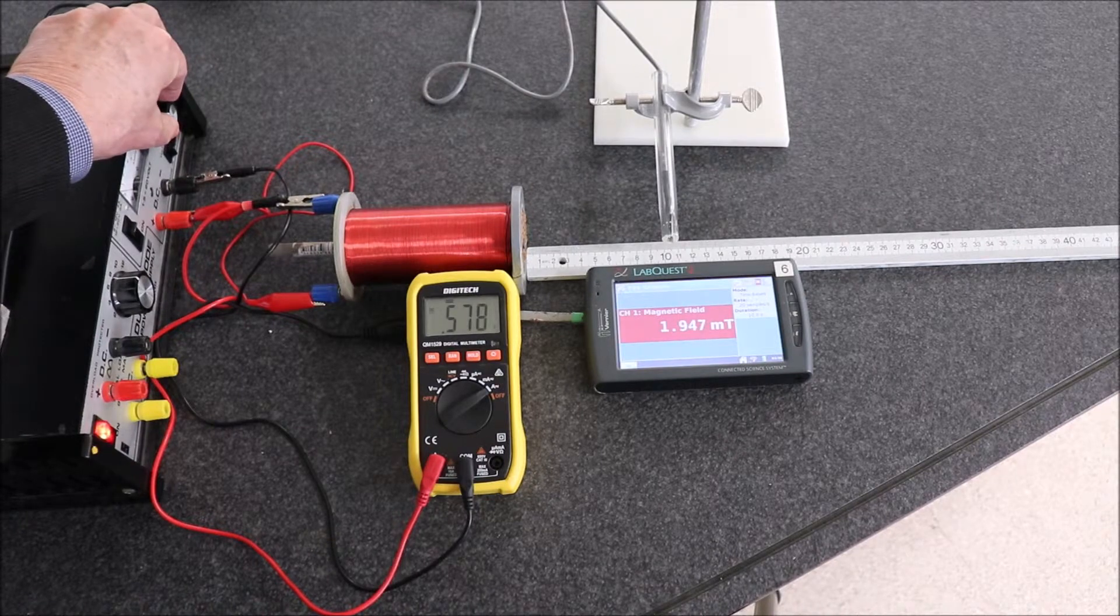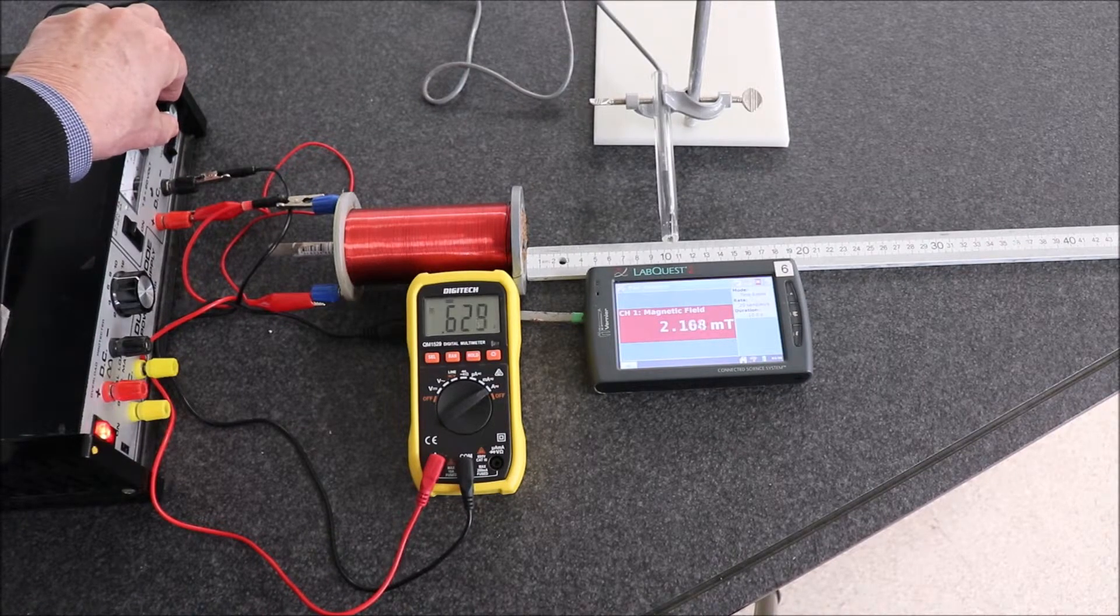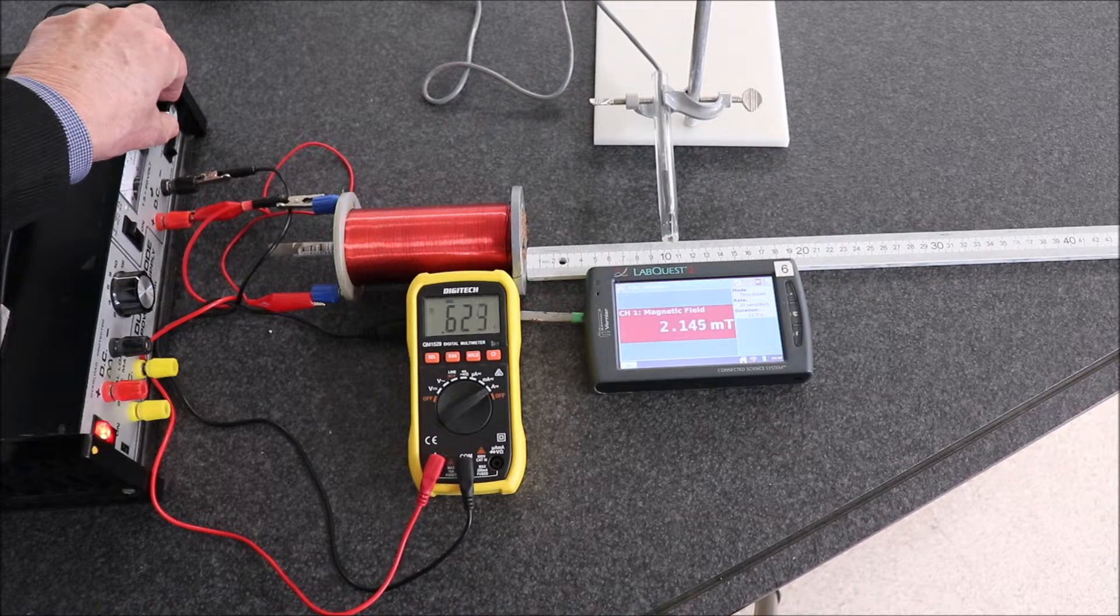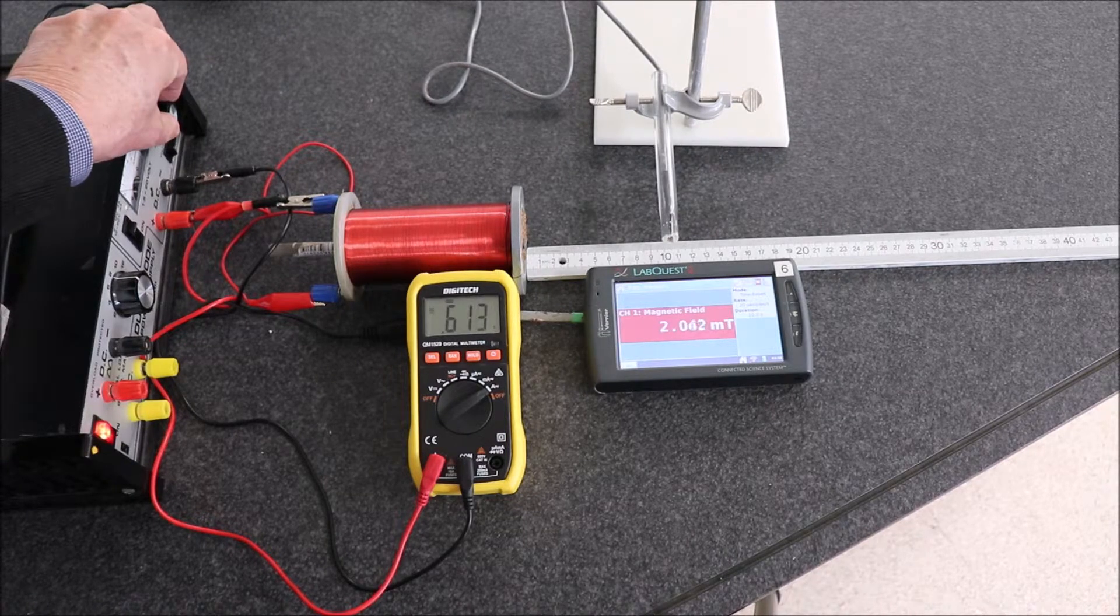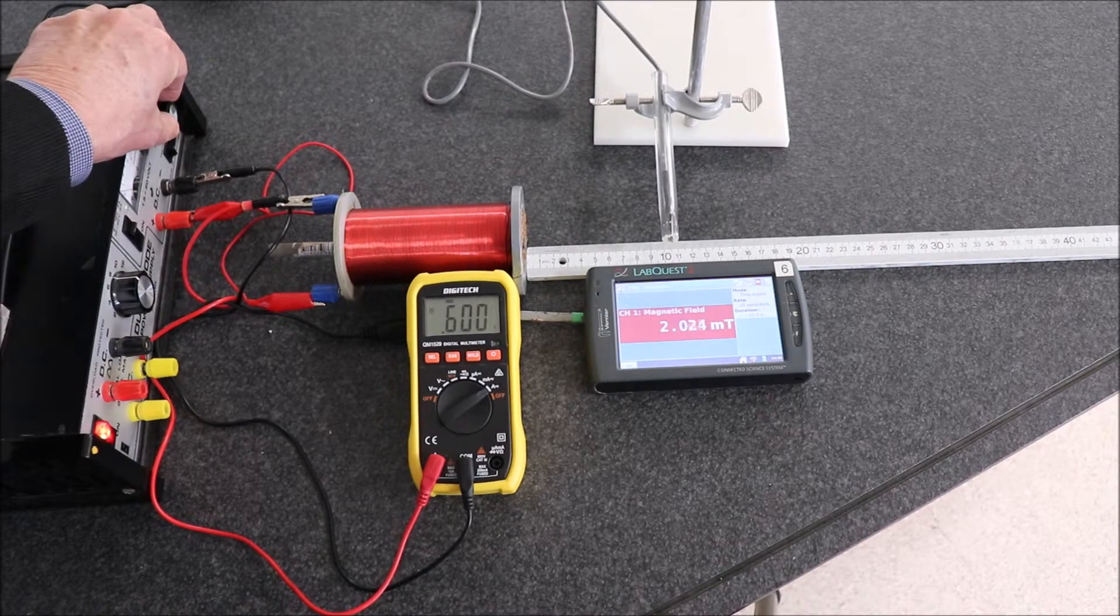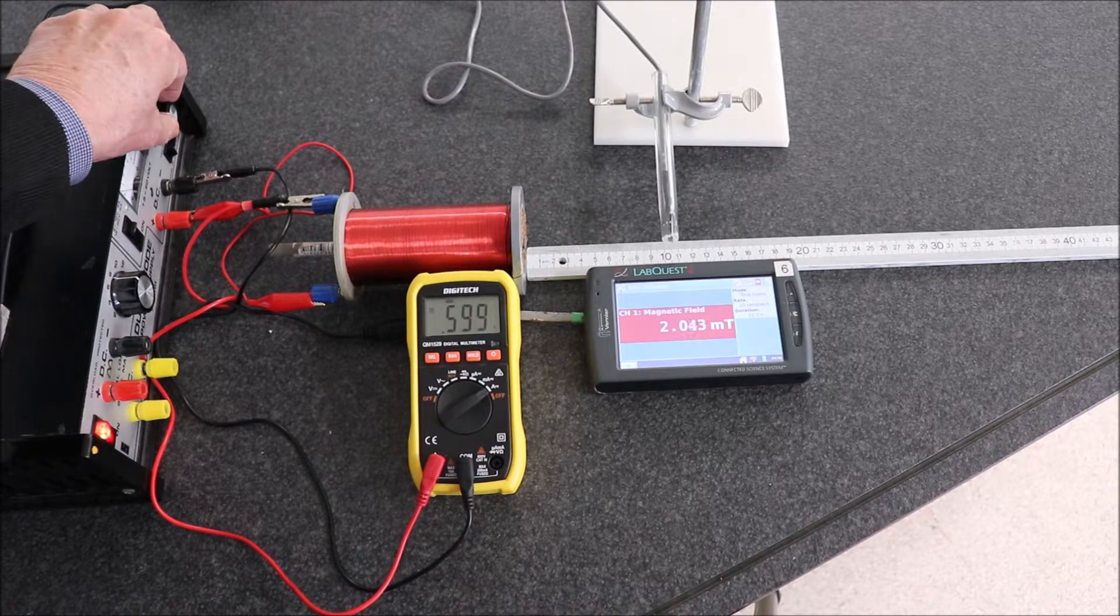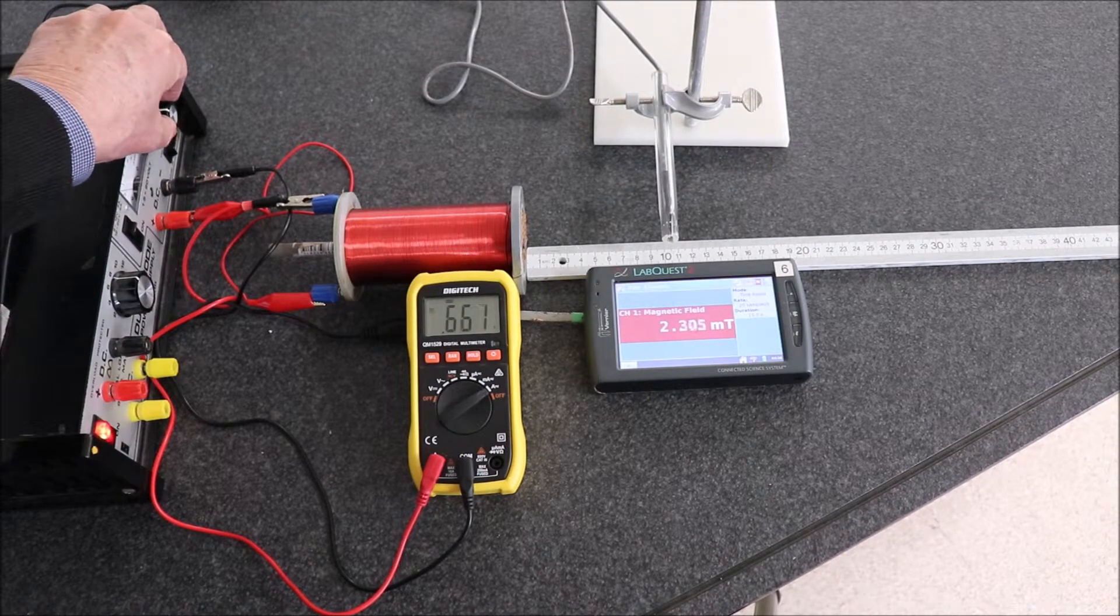Now it's looking fairly linear at the moment so when we plot it hopefully we'll see a nice linear relationship. Okay we're up to 0.6, that's something like 2.0 millitesla.